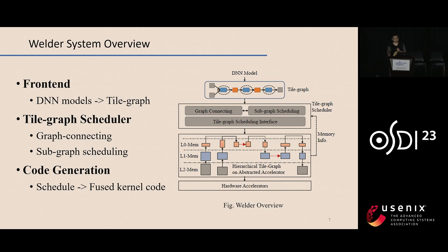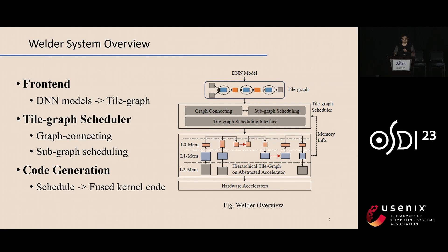To address these challenges, we designed the Welder system. First, Welder's frontend converts a DNN model — typically an ONNX file — into the TileGraph object. Then, the TileGraph scheduler is responsible for searching for the best connection and schedule plan, which includes the subgraph scheduling phase and the graph connecting phase. Finally, there is a code generation module that lowers the schedule into a final fused kernel executable on hardware accelerators.